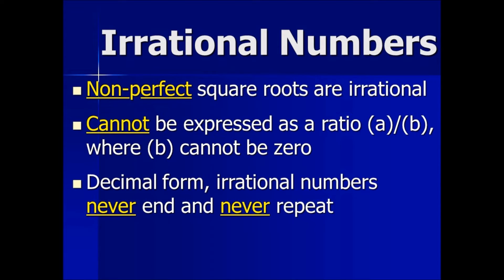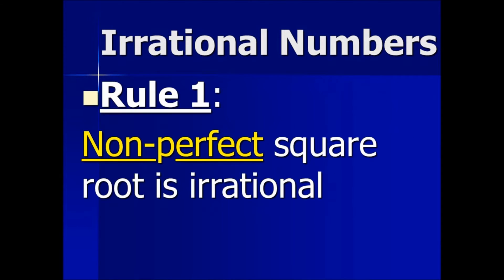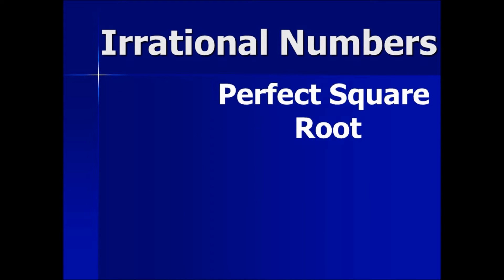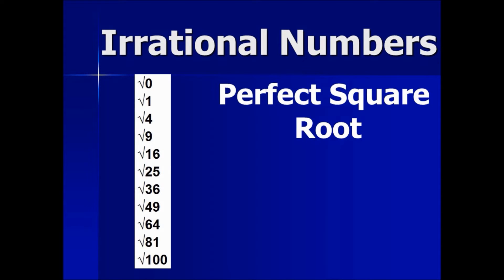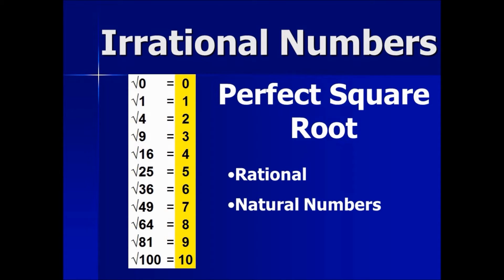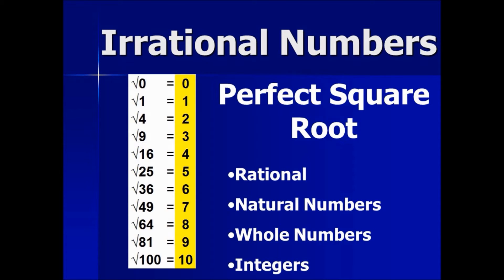Let's go over each definition in detail. Rule number one: a non-perfect square root is irrational. You may be asking yourself, what in the world is a non-perfect square root? To understand non-perfect square roots, we have to look at a list of the perfect square roots. Here is a list of perfect square roots from 0 to 100. As we evaluate each perfect square root, notice that all the solutions are in yellow. These solutions are rational because they are natural numbers, whole numbers, integers.